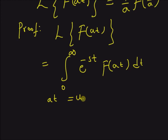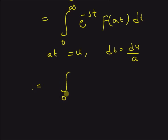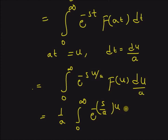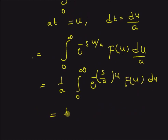Now by rewriting at as u and dt as du/a, the limits won't change because for t=0, u=0, and for t=∞, u=∞. So the integral becomes the integral from 0 to infinity of e^(−s·u/a) f(u) du/a, which equals (1/a) times the integral from 0 to infinity of e^(−(s/a)·u) f(u) du — which is by definition the Laplace transform with s replaced by s/a.